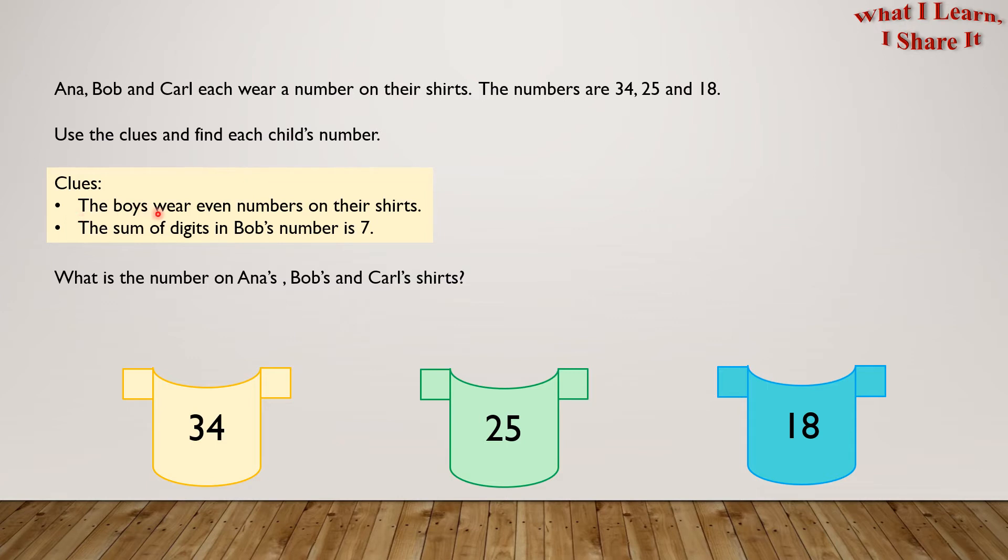The boys wear even numbers on their shirts. So this means number 34 and number 18 must have boys wearing them. And number 25 must have a girl.